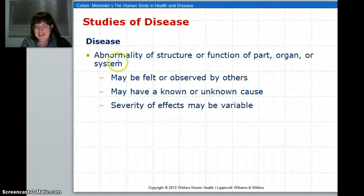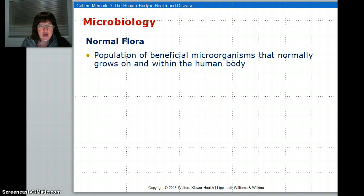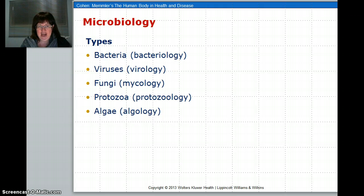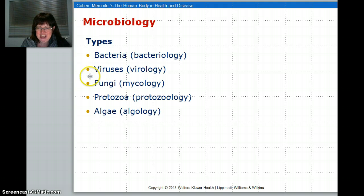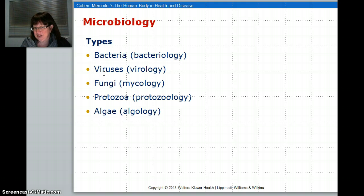A disease is an abnormal structure or function. In terms of microbiology, you have bacteria, which are very different from viruses. Bacteria are small organisms that can be killed with antibiotics. Viruses are very hard to kill, so that's why it's important that the body just deal with it.